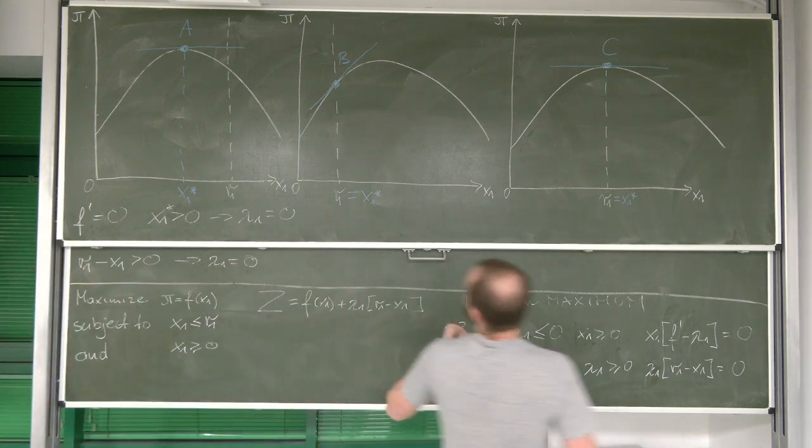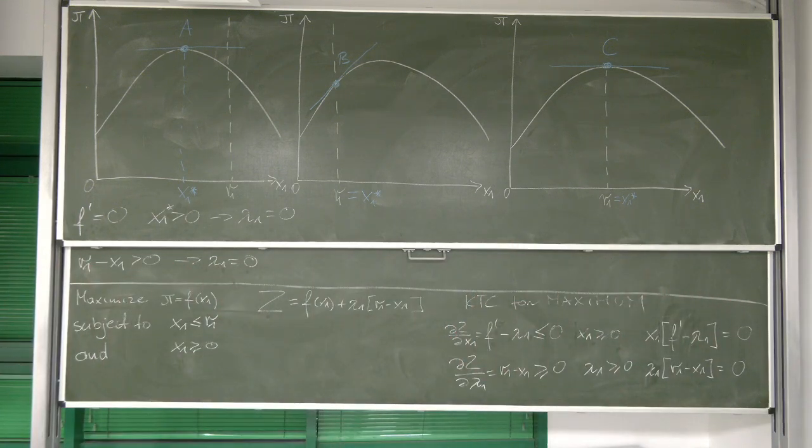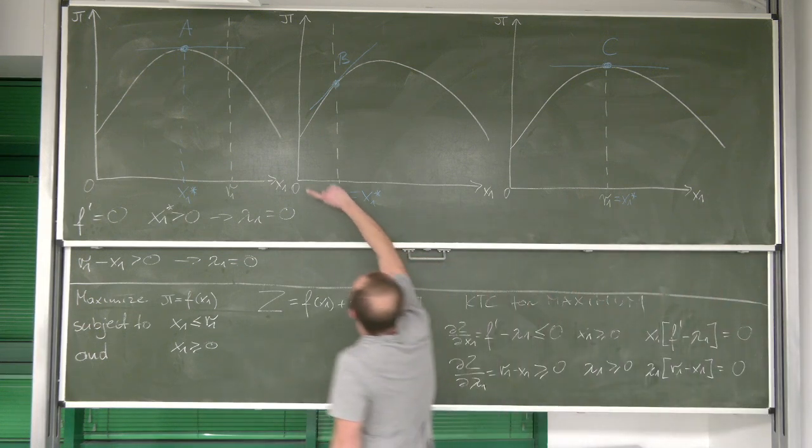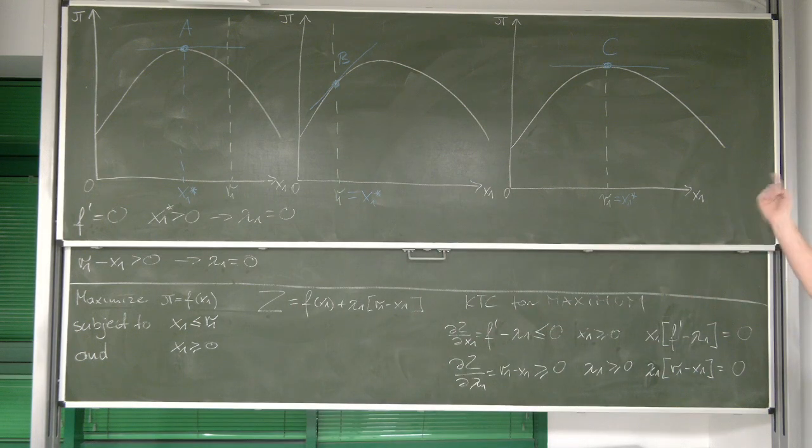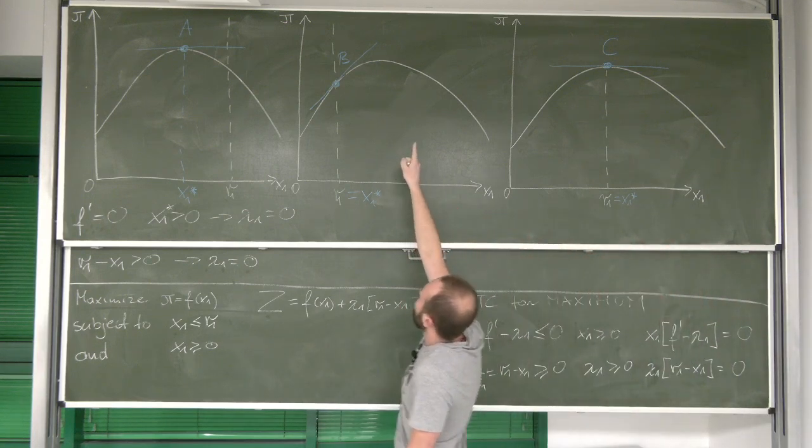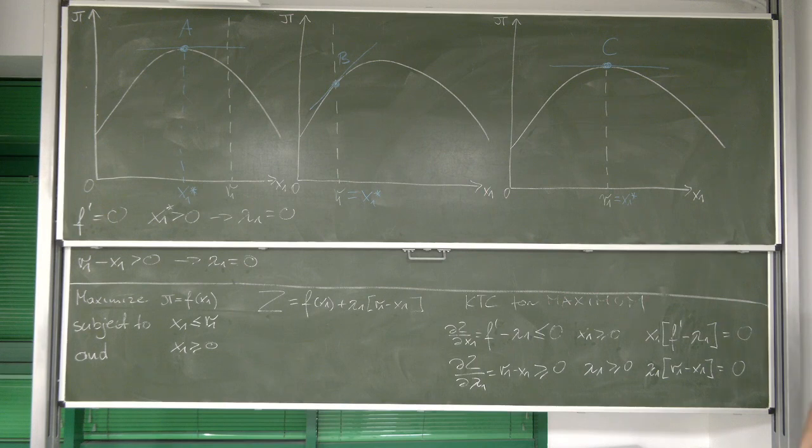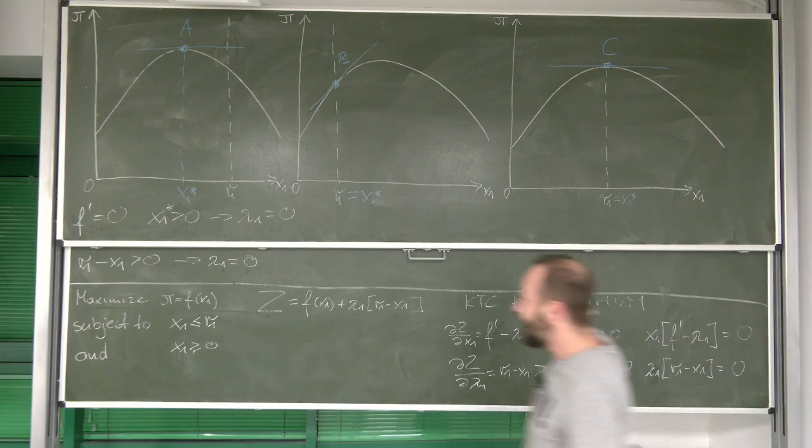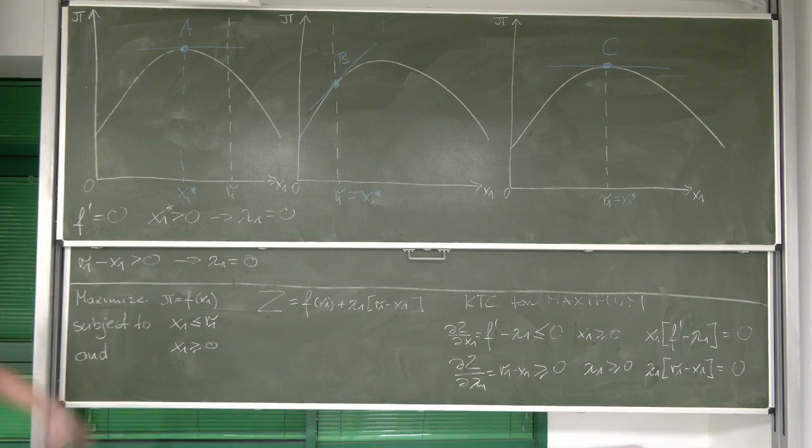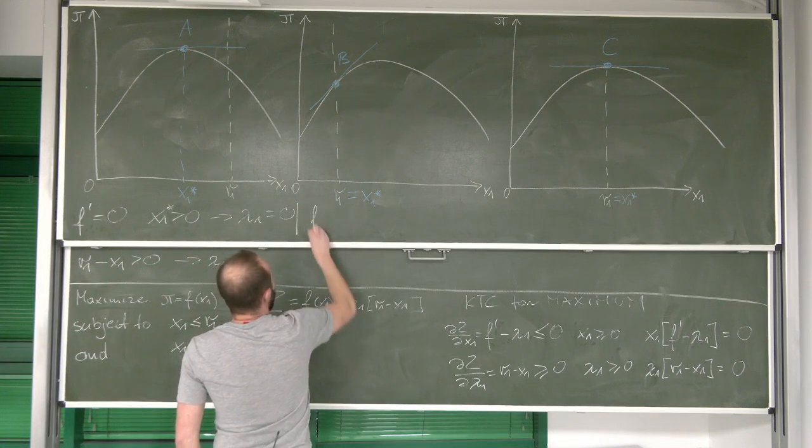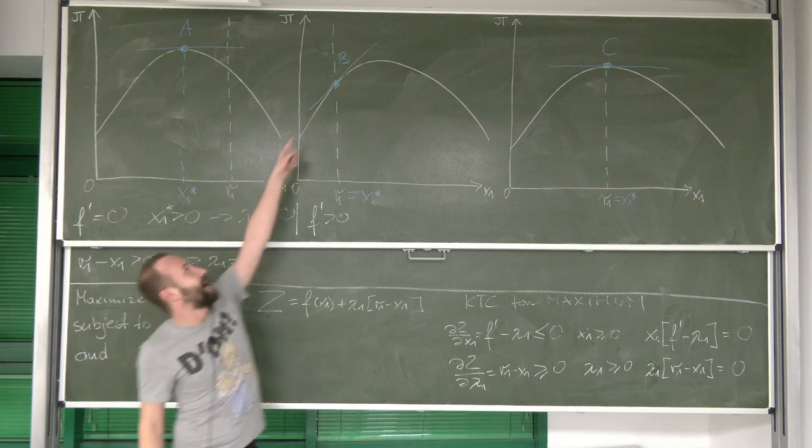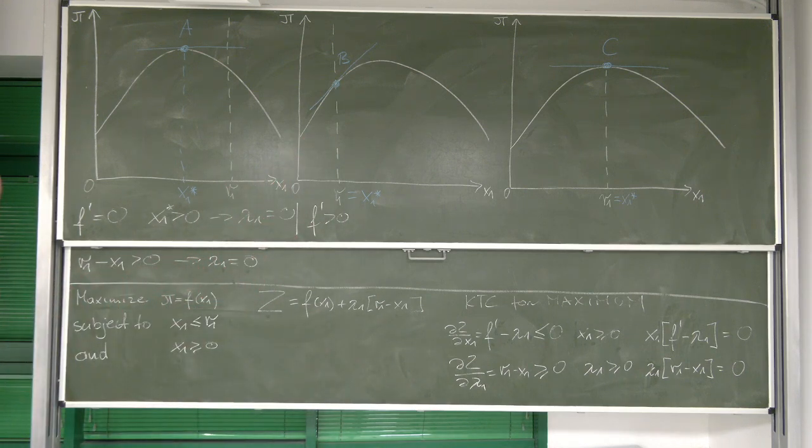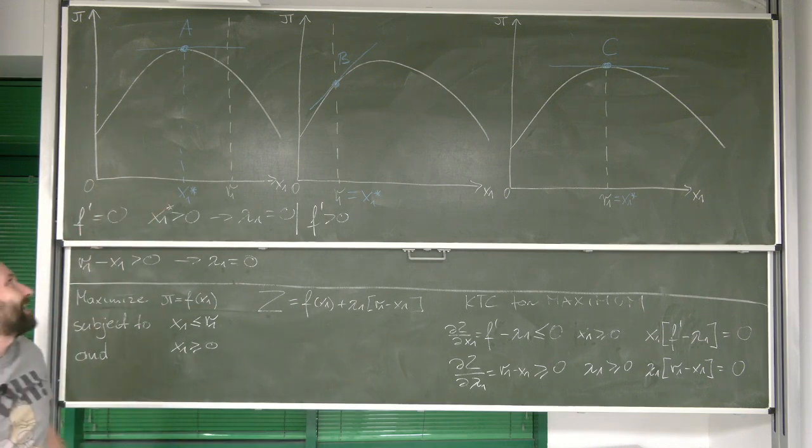So what about case B? Well, in this case, we clearly see that if we would be going like this along the x1 axis, we would be finding bigger and bigger values of the function. We haven't reached the maximum period. So, how would we describe this situation? Well, first thing I can notice is that f prime over here is clearly bigger than zero. We see that at the point where we find the highest value, the slope of the function is actually positive.